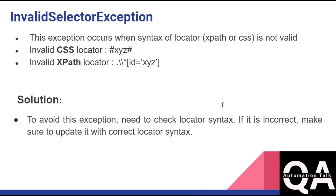Let's get started. The first exception is InvalidSelectorException. This exception occurs when the syntax of the locator that you're using is not correct. For example, here is an invalid CSS selector — you can clearly see that this hash is referring to the ID and 'XYZ' is the value of the ID, but this hash I have put in by mistake. So if you're going to use this CSS selector locator, you are going to get InvalidSelectorException. The same goes with an invalid XPath locator.